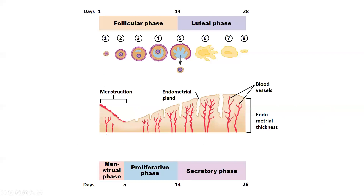In the ovary during the follicular phase, we have development of the Graafian follicle. In the uterus, two things happen: the early follicular phase corresponds to the menstrual phase — shedding of the endometrium — while the end of the follicular phase corresponds to the proliferative phase — rebuilding of the uterine lining. The luteal phase corresponds exactly to the secretory phase. If implantation doesn't occur, the drop in estrogen triggers menstruation and the cycle starts over.